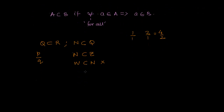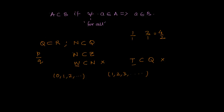Whole numbers have 0 and all natural numbers. If you remove 0 from the set of whole numbers, it actually becomes the set of natural numbers. Is the set of irrational numbers a subset of rational numbers? No — an irrational number cannot be expressed as P/Q, so irrational numbers and rational numbers are quite different.